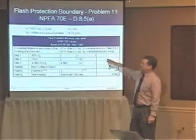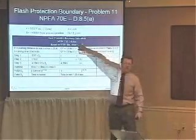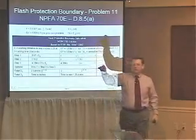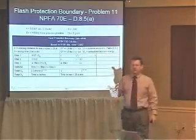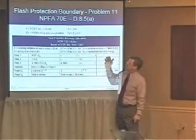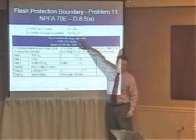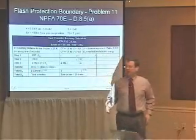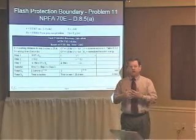This is the worksheet we're going to use. The normalized incident energy from the previous problem is 4.8206 joules per square centimeter — that's based on 0.2 seconds and 24 inches, or 2 feet. The X value we looked up previously is still 1.641. We want to determine the flash protection boundary based on reaching 5 joules per square centimeter. Take a few moments, run through the numbers, and see what you come up with.